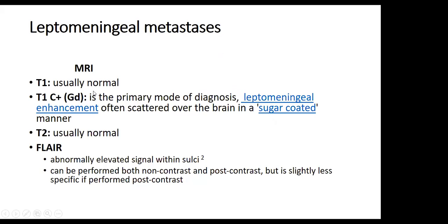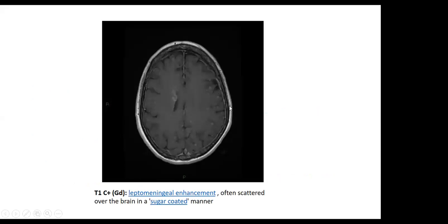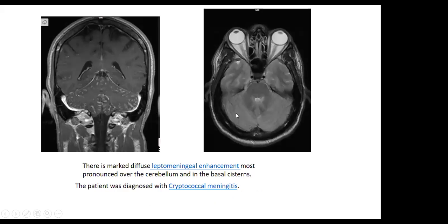Leptomeningeal metastasis on MRI: T1 is usually normal; T1 contrast is the primary mode of diagnosis, with leptomeningeal enhancement often scattered over the brain in a sugar-coated manner. T2 is usually normal; FLAIR shows abnormally elevated signal within CSF spaces. A case of meningeal carcinomatosis shows scattered leptomeningeal enhancement in a sugar-coated manner, most pronounced over the cerebellum and basal cisterns. The patient was diagnosed with cryptococcal meningitis. T2 is completely normal — we should not depend on T2 alone.